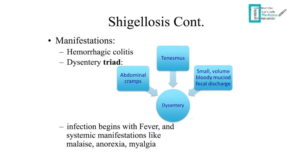The manifestations of shigellosis include hemorrhagic colitis and dysentery. Dysentery presents with a triad of abdominal cramps, tenesmus — painful defecation — and small-volume bloody mucoid fecal discharge. Importantly, shigellosis initially begins with watery diarrhea, fever, and systemic symptoms like malaise, anorexia, and myalgia, and the diarrhea subsequently becomes bloody.